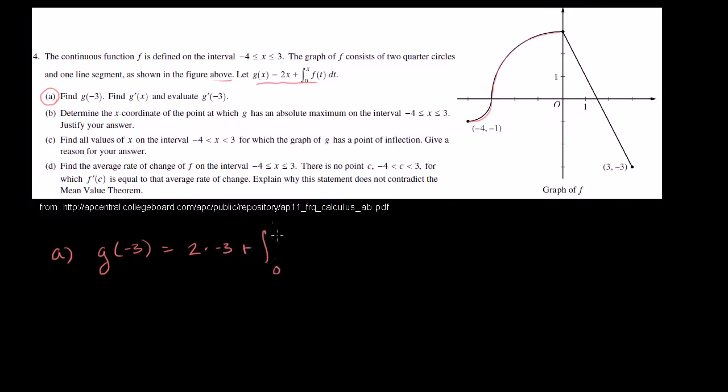Now let's do part a: find g of negative 3. So we want to find g of negative 3. They tell us what g(x) is, so g(-3) — every time we see an x, we just put a negative 3 there. So it's going to be 2 times negative 3, plus the definite integral from 0 to negative 3 of f(t) dt. This first part is pretty straightforward: 2 times negative 3 is negative 6.